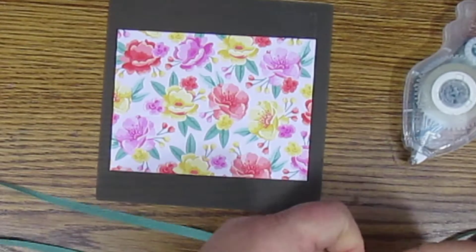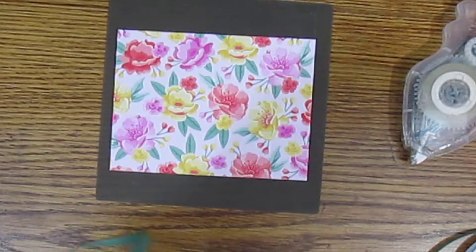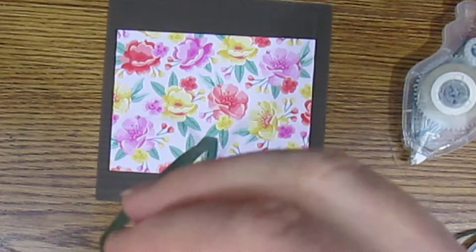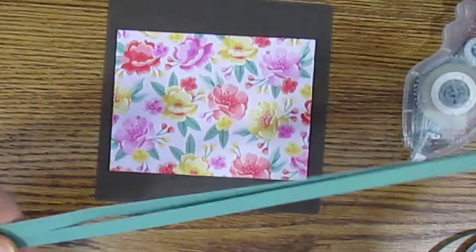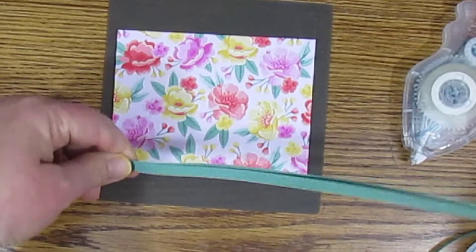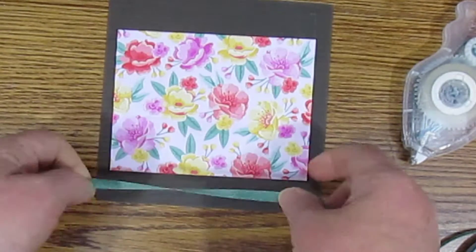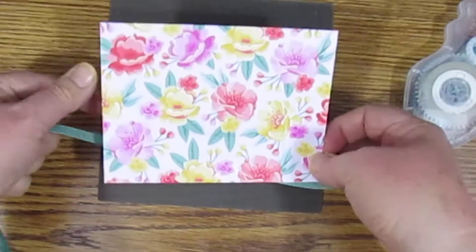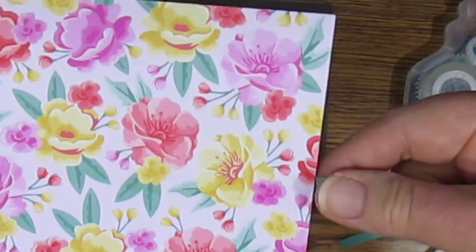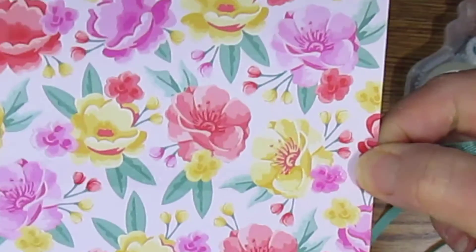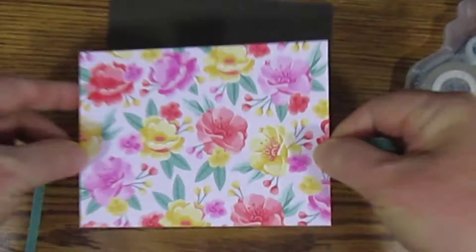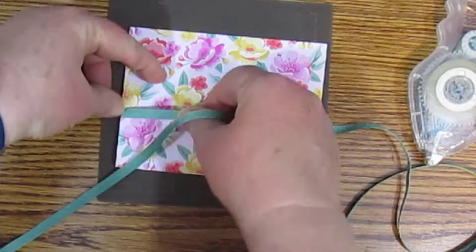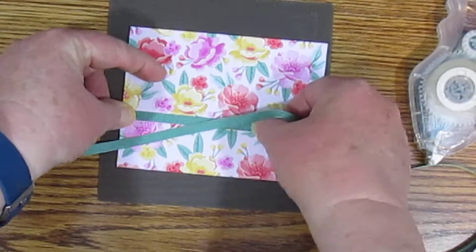That should give us plenty of room to work. Let's see, move it over to one side. I guess we'll just fake it and line it up with the strip, and then just lay your ribbon down until where you want to tie your bow.